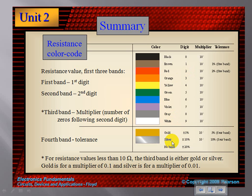Your last band will always be gold or silver, and this refers to the tolerance. Resistors are rated within a certain amount — if it says it's an 82 kilo-ohm resistor, you're going to be within 82 kilo-ohms, within 5% for a gold band or 10% for a silver band. If there's no band, it's within 20%.